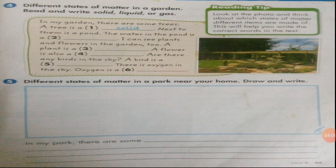I can see plants and flowers in the garden too — a plant is a dash: solid, liquid, or gas? A flower is also a dash. Are there any birds in the sky? A bird is a dash. There is oxygen in the sky — oxygen is present in the air and we need it to survive. Oxygen is a dash — is it a solid, liquid, or gas?